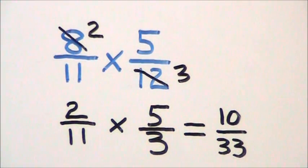This gives us a new problem, 2 11ths times 5 thirds, that's easier to multiply.